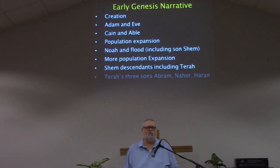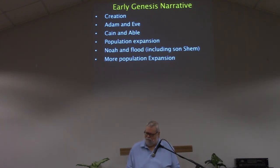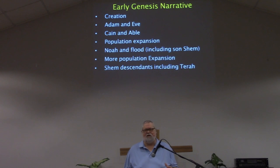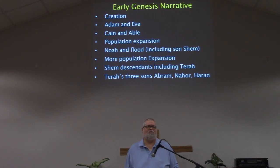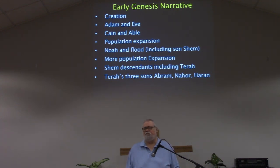The next couple chapters move into ideas about the population explosion that took place and how it grew even more. And then it narrows in on Shem and his descendants until it gets to the point where it talks about one of his descendants being named Terah. It mentions that Terah had three sons: Abram, Nahor, and Haran. That's basically, in a nutshell, Genesis 1 to 11.